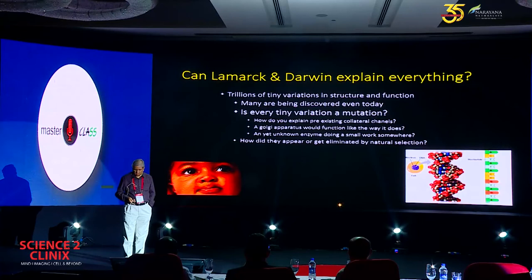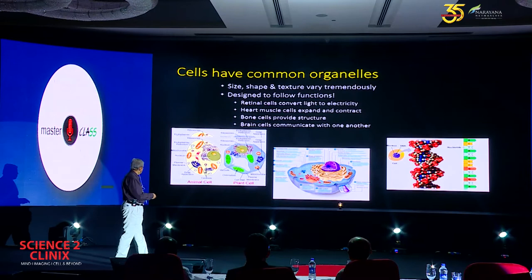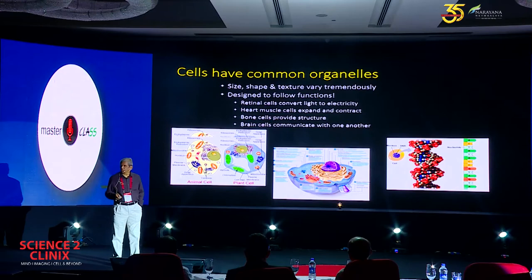All cells have common organelles — you see the plant cell and the animal cell, they are all similar. Retinal cells convert light into electricity. Heart muscles can expand and contract. The same cell performs different functions depending upon the need of the function in the locality where it is located.